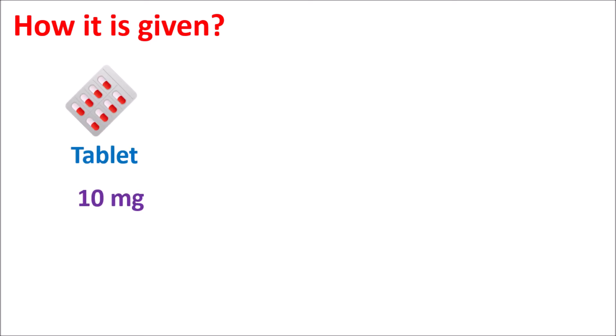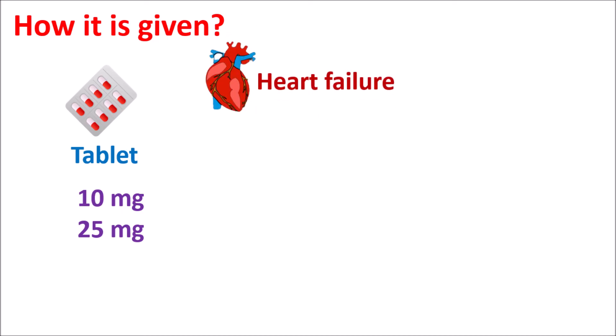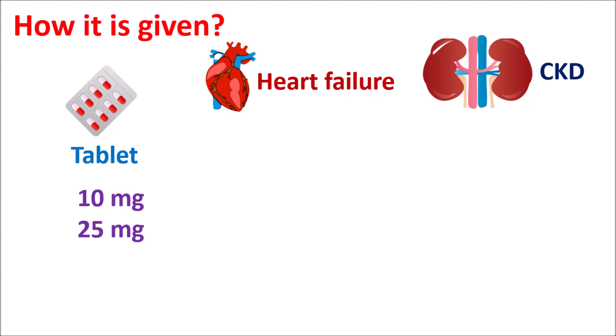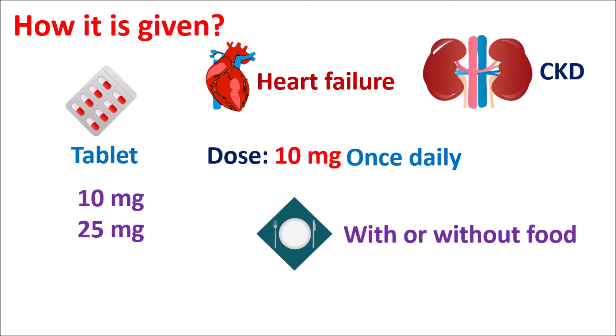Empagliflozin is available as a tablet at a strength of 10 mg as well as 25 mg. For people with risk of heart failure or chronic kidney disease, it is given at a dose of 10 mg once daily. This tablet can be taken either with food or without food. However, this drug should not be given in people with eGFR less than 30 mL per minute. In people with type 2 diabetes, the dose can also be increased to 25 mg, but for heart failure and chronic kidney disease, it is initiated at 10 mg once daily.